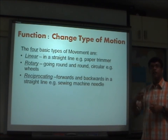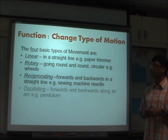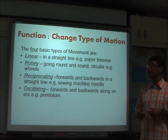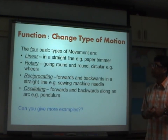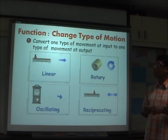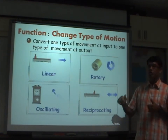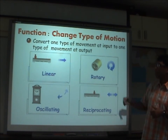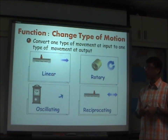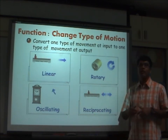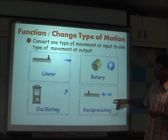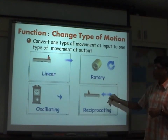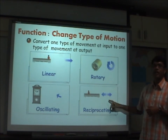The last type is oscillation — forwards and backwards along an arc, like a pendulum. If you can think of other motions, please think through and we can discuss. To give a further idea of how each motion looks: linear motion is like switching a switch forward; rotary motion is like a motor rotating; oscillating motion is like a grandfather's clock swinging in an arc; and reciprocating motion is like switching something on and off repeatedly.